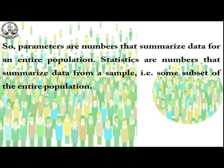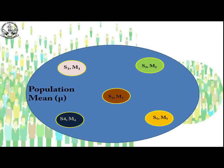Statistical constants of a population, like mean and variance, are called parameters. The main thing is: statistical constants of population are parameters, while those of samples are called statistics. Parameters are numbers that summarize data for an entire population, and statistics are numbers that summarize data from a sample — some subset of the entire population.